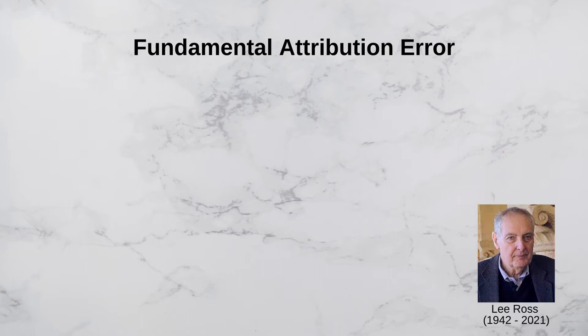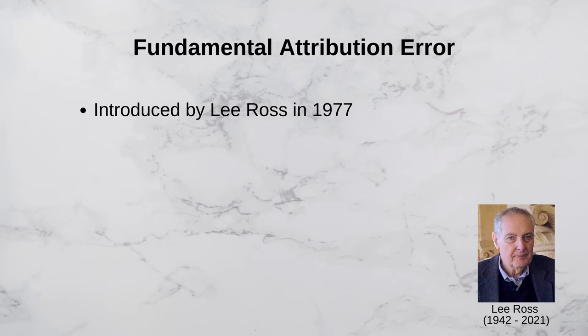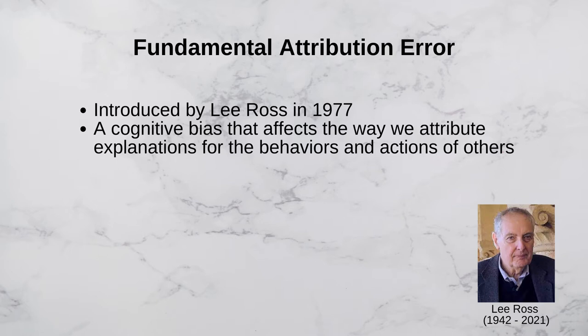Hello everyone and welcome back to Psychology 101. In this video, we will discuss a famous concept in psychology known as the fundamental attribution error. This concept was first introduced in 1977 by the psychologist Lee Ross. The fundamental attribution error is a cognitive bias that affects the way that we attribute explanations for the behaviors and actions of others.